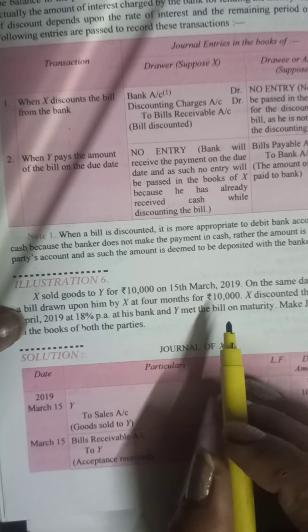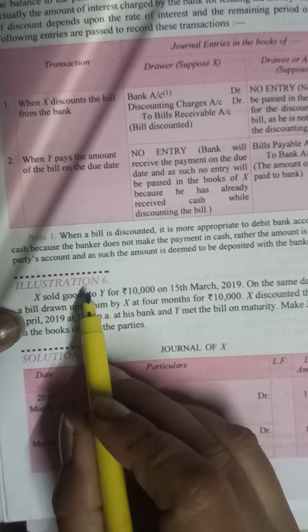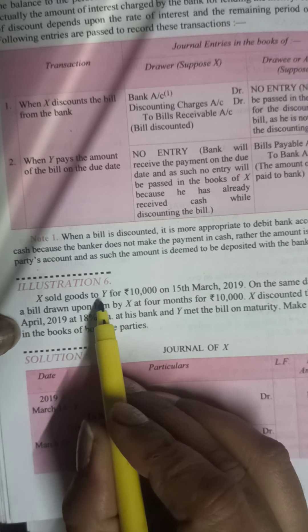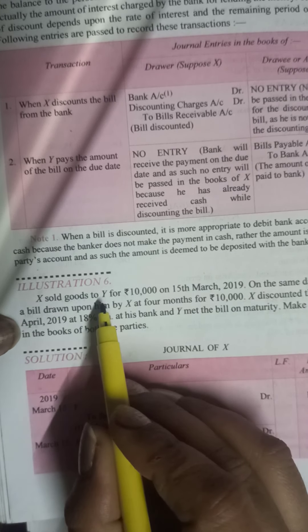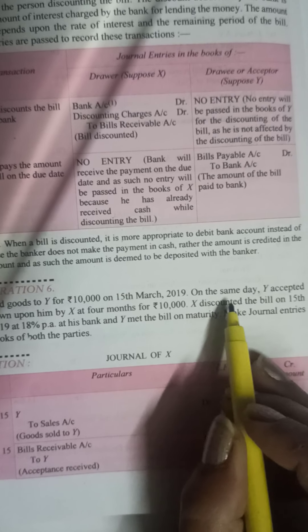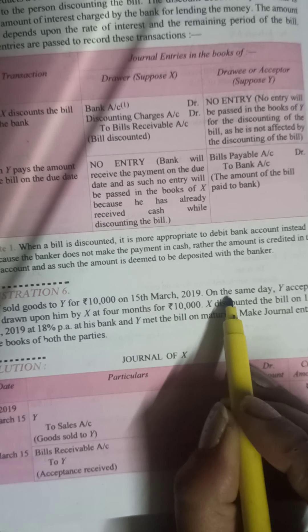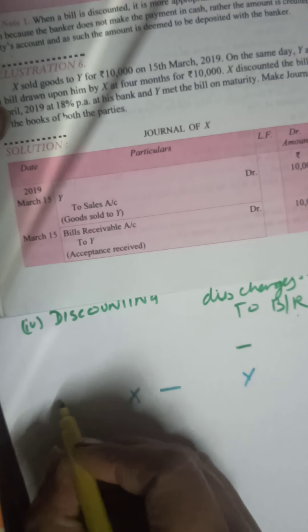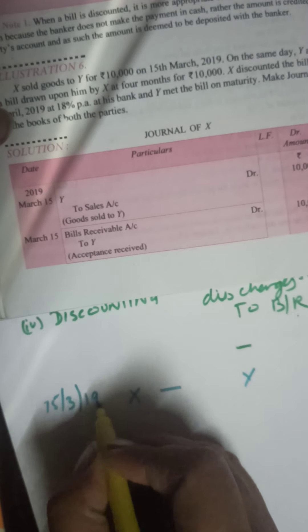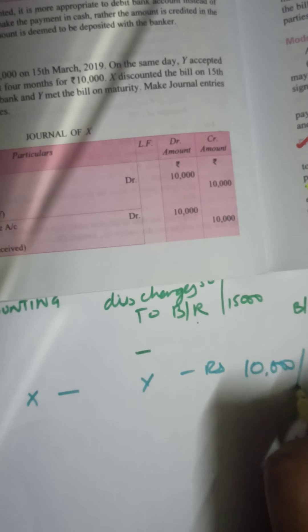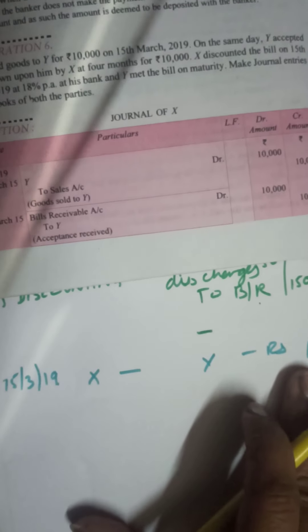Continuing with discounting of bill of exchange, we reach Illustration 6. X sold goods to Y. X is the drawer and Y is the drawee. X is the seller and Y is the purchaser for rupees 10,000. The date is 15th of March 2019. Y accepted the bill on the same date.